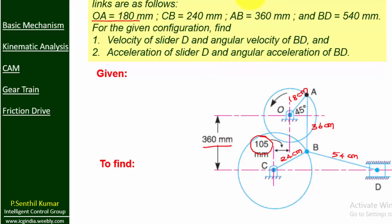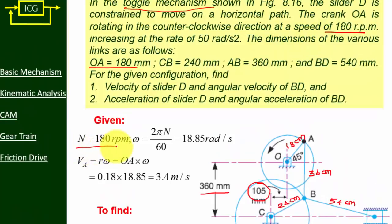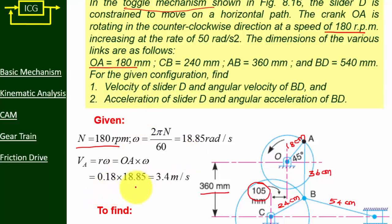The angular rotation of the crank is 180 rpm, i.e. N = 180 rpm. Then omega = 2πN/60, giving 18.86 radians per second. Now I can calculate the velocity of the crank, VA, which is OA × omega. OA = 0.18 m × 18.85 = 3.4 m/s. This is the known velocity of the crank.